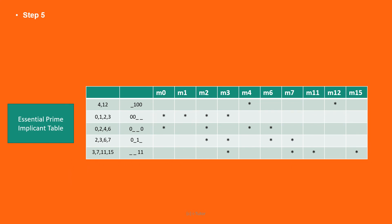Step five. Find the essential prime implicants. Observe each column, if the minterm is covered only by one prime implicant, that is our essential prime implicant.